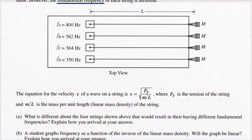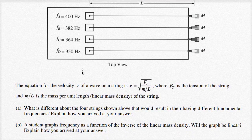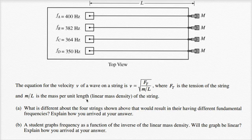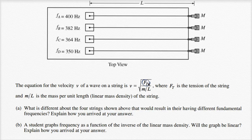Now let's answer the questions. The equation for the velocity v of a wave on a string is v equals the square root of the tension divided by the linear mass density (m/L). It makes intuitive sense: if tension increases, velocity increases, because the atoms of the string pull on each other more strongly, accelerating each other better as the wave travels.